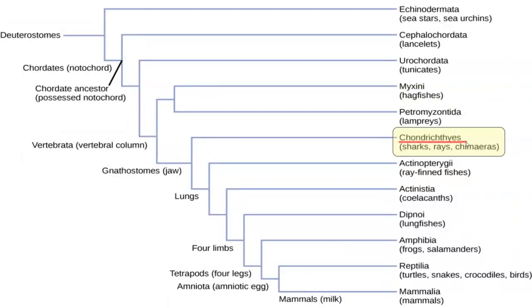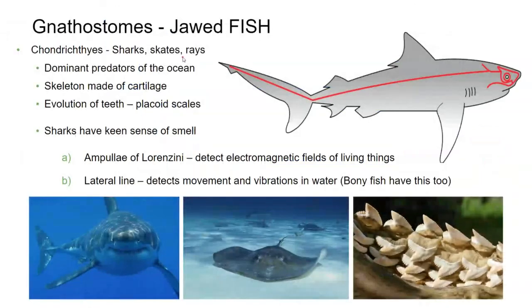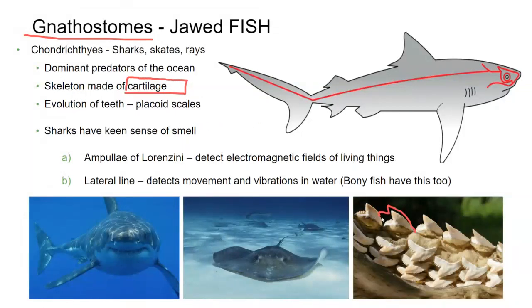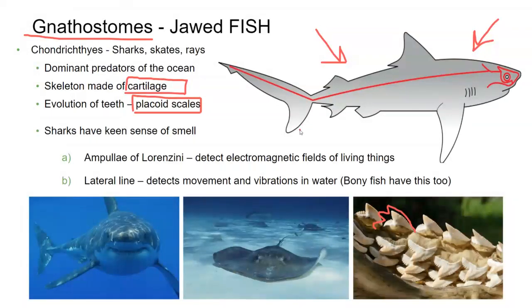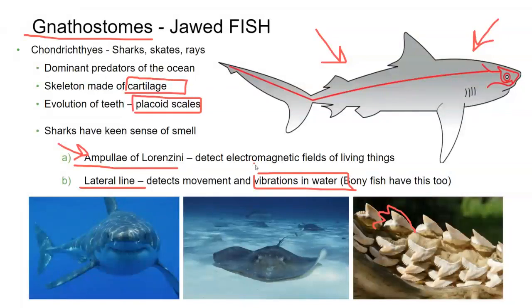Let's talk about Chondrichthyes — we're talking about your sharks, rays, and skates. These are jawed fish, part of the gnathostome family. Chondrichthyes are usually predatory. They do not have bones — they are cartilaginous. But they do have highly developed teeth, which are modified placoid scales. I love sharks — they are evolutionary winners, pretty much unchanged for 400 million years. They have a very good sense of smell and interesting organs like the ampullae of Lorenzini, which detect electric fields or the movement of their prey. They also have the lateral line, which detects vibrations in the water. The ampullae of Lorenzini can detect electromagnetic fields — awesome animals.